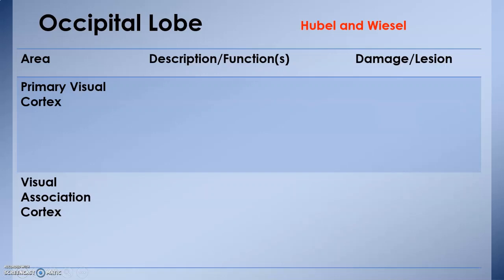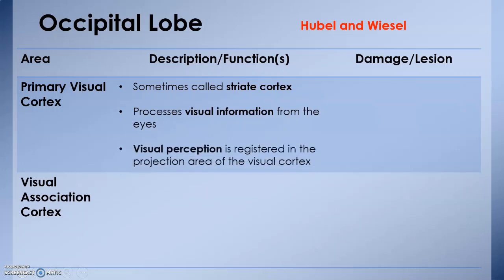The primary visual cortex and the visual association cortex. The primary visual cortex is sometimes called the striate cortex. When we view primary visual cortex under the microscope, it appears to have a striped appearance—that is why it's called the striate cortex. It processes visual information from the eyes and is responsible for visual perception.